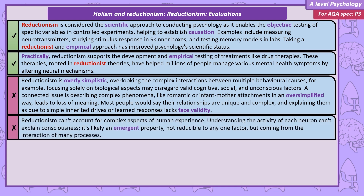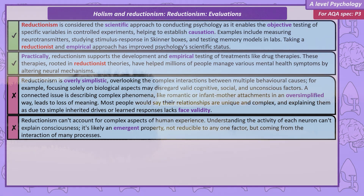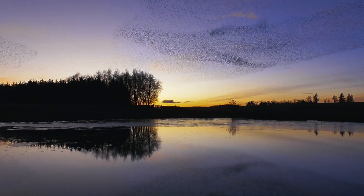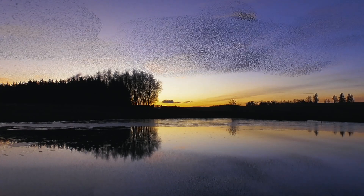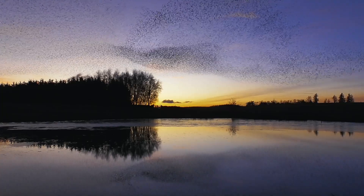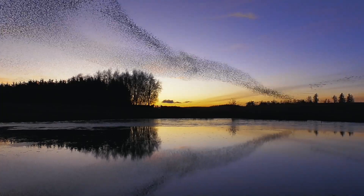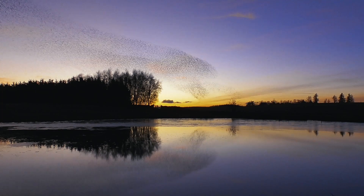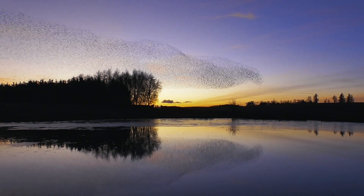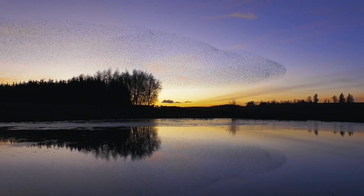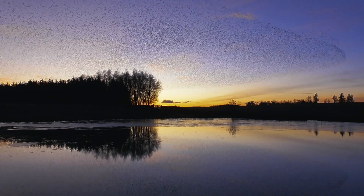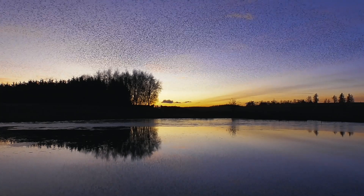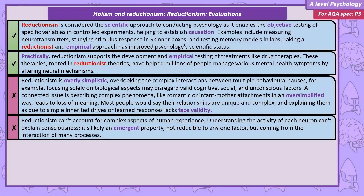A final criticism is that reductionism ignores emergent properties. Taking a non-psychological example, each bird in a flock follows the same straightforward rules in flight to avoid hitting another bird. What we can see are murmurations — these patterns can't be seen from the simple rules of one bird; this complexity emerges from thousands of birds acting together. There are features of human experience like consciousness that simple processes of individual neurons can't explain. But like murmurations, consciousness might be an emergent property, so an explanation that includes interaction is needed.